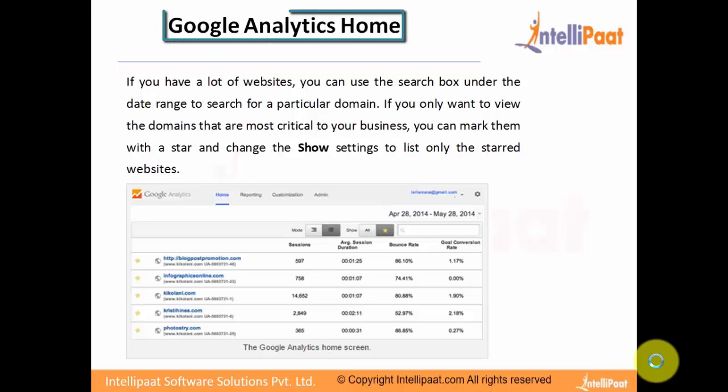Let's take a look at the Google Analytics homepage. If you have a lot of websites, you can use the search box under the date range to search for a particular domain. If you only want to view the domains most critical to your business, you can mark them with a star and change the show settings to list only the starred websites. The screenshot below will give you a date range from which you can view different metrics such as sessions, average session duration, bounce rate, goal conversions, etc. These data would be available for different websites that you run for your business.